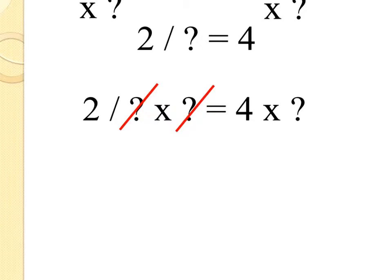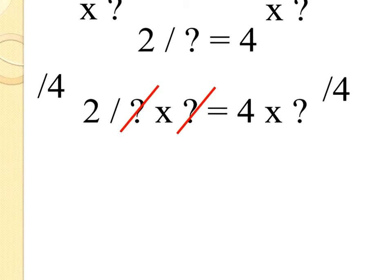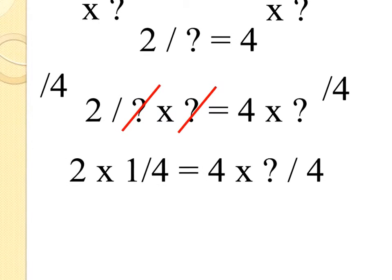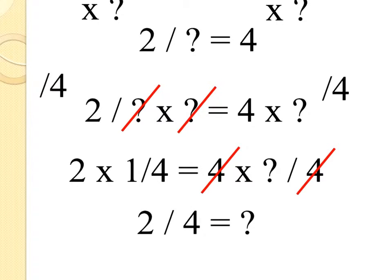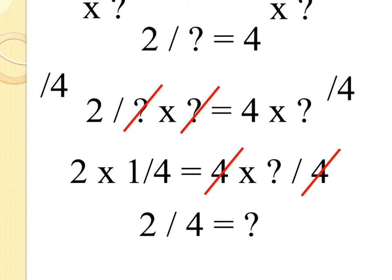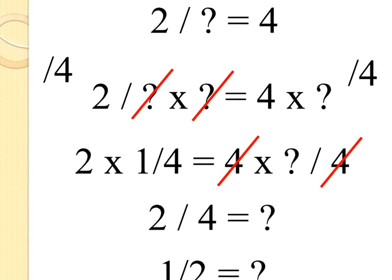However, it's still not by itself. So I need to get rid of the 4. I can do that by dividing by 4. Once again, I divide 4 on both sides, giving me this. The 4s cancel. And I'm left with 2 divided by 4, which is 1 half.